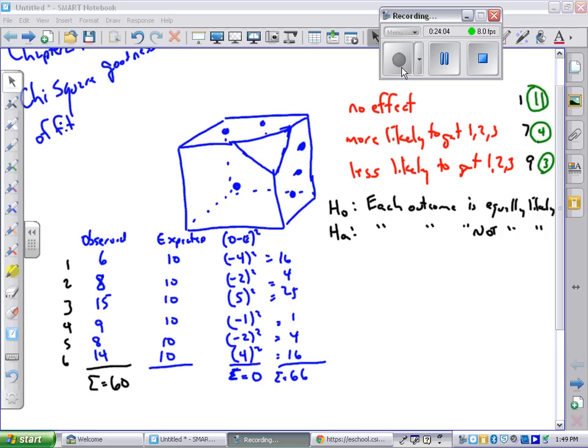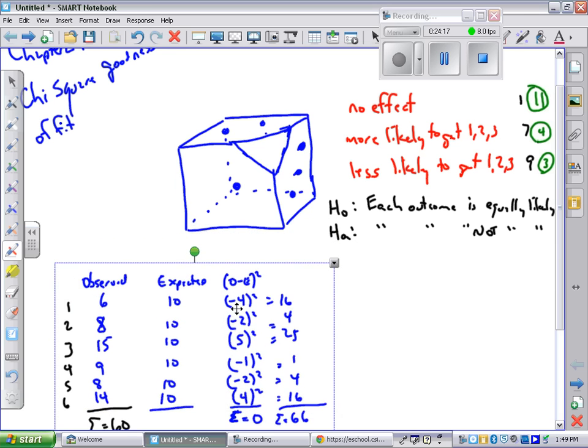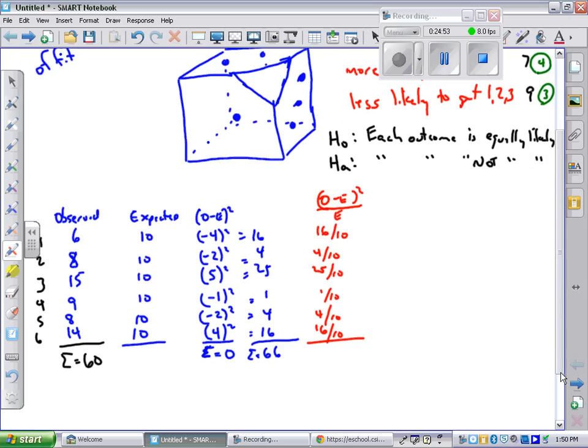Here's what we're going to do with our dice problem. We're going to take these observed minus expected squareds and divide them by the expected. This first number was 16 square units wrong divided by an expected 10 total values. So this is 16 over 10, 4 over 10, 25 over 10, 1 over 10, 4 over 10, 16 over 10. To sum up that row, can I just take this 66 over 10? Yeah, you actually can. So the sum here is 66 over 10, which is 6.6. This number, 6.6, is something called the chi-squared test statistic.